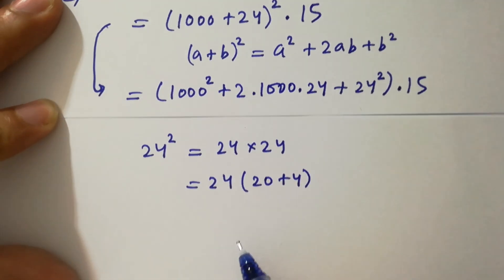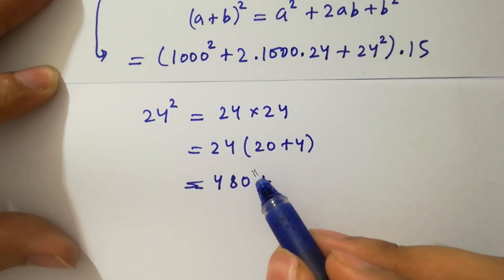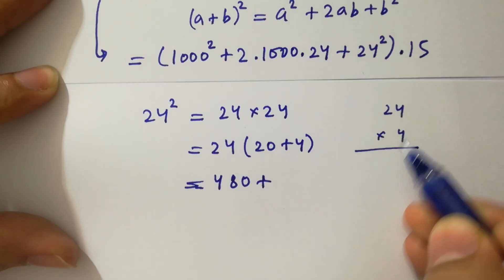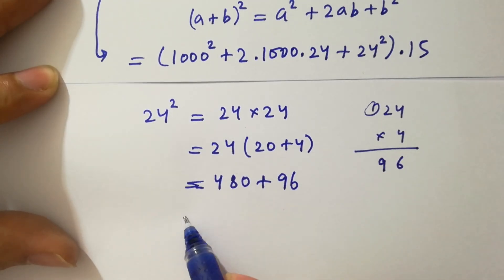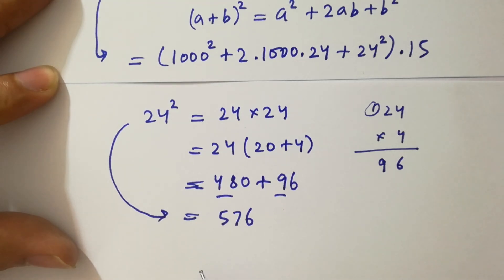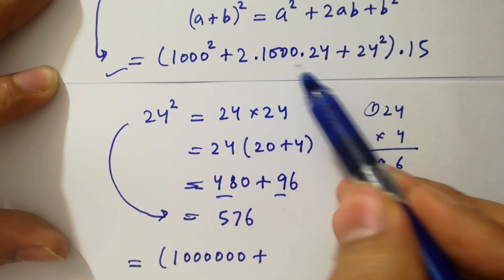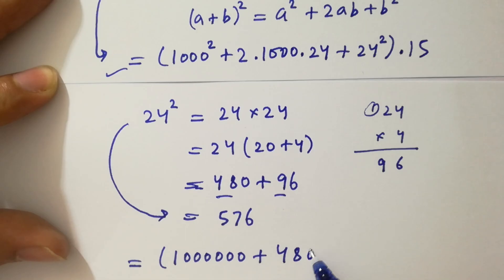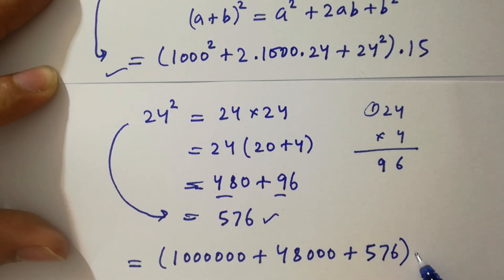Computing: 24 times 24 — 24 is the same as 20 plus 4. We calculate 2 times 1000 times 24 gives 48,000. And 24 squared: 4 times 4 is 16, carry 1; 4 times 2 is 8 plus 1 is 9; so 24 squared equals 576. And 1000 squared equals 1,000,000.